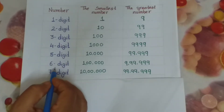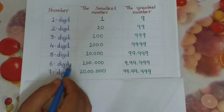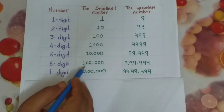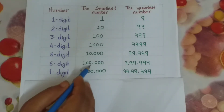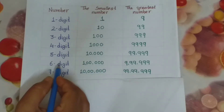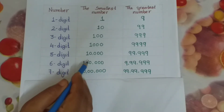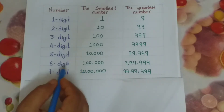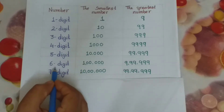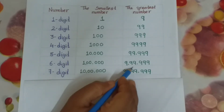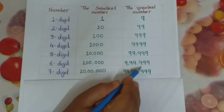Now for six-digit numbers: the smallest six-digit number is 1 lakh. In 1 lakh, five zeros are there, and it is a six-digit number. The greatest six-digit number is 9 lakh 99,999.